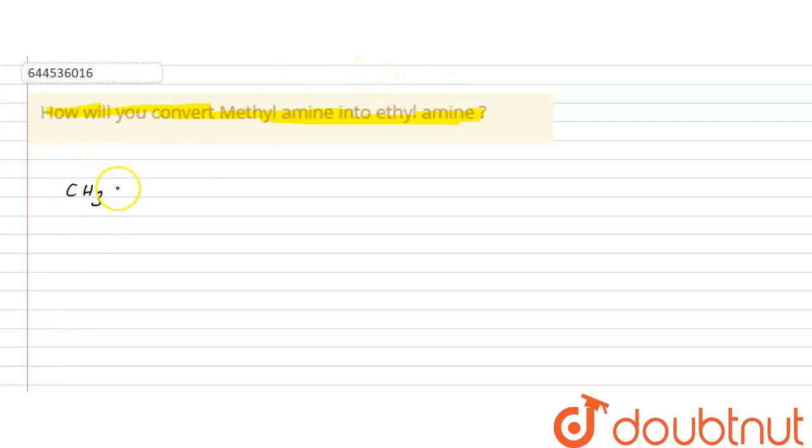It is CH3NH2, and you need to convert it into ethylamine. What is the formula for ethylamine? We know it's CH3CH2NH2. This is the formula for ethylamine. Now what are the series of reactions which you are going to take?